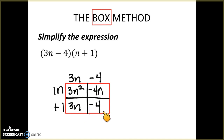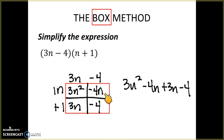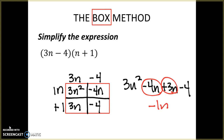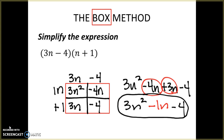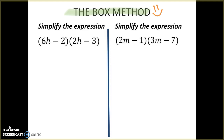Once the box is filled in, I write each term out and then look at combining like terms. The product of this binomial times this binomial is 3n squared minus 4n plus 3n minus 4. The middle terms are the like terms — negative 4n plus 3n gives negative 1n. I bring down my 3n squared and my minus 4. This is my answer for multiplying this binomial times this binomial.